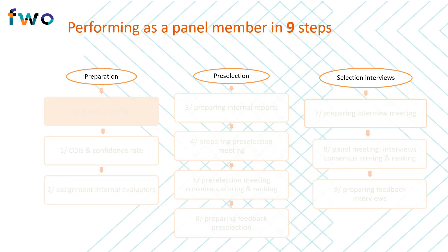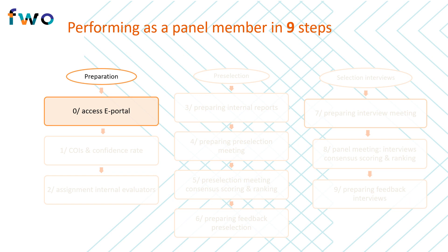We will now briefly discuss all the concrete actions you need to take as a panel member. These actions are grouped in three phases: the first phase is preparation, the second phase relates to pre-selection and the steps leading up to it, and the third phase to the selection interviews. During the first phase it is important that you access the FWO ePortal. The FWO shares all applications and evaluations through this online platform. You will also submit all reviews you write through this platform. There is a separate instruction video available on how to navigate the ePortal should this be helpful to you.